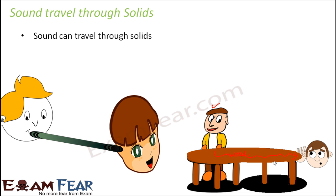Now if you want, you can try some other experiments also. For example, instead of using a wooden table, you might use a metal rod — a solid rod, not hollow. Somebody makes a sound on one end and you keep your ear on the other end, and you will be able to hear the sound. So basically sound can travel through solids like metals, wood, strings, plastics, etc.